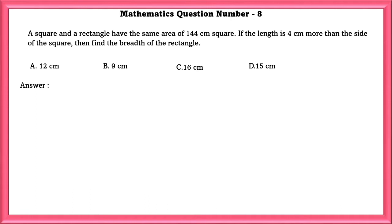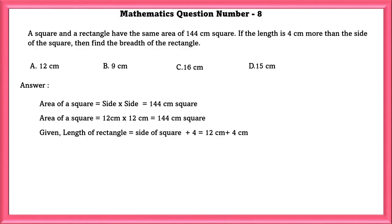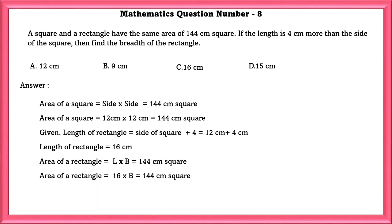Mathematics Question Number 8: A square and a rectangle have the same area of 144 cm square. If the length is 4 cm more than the side of the square, then find the breadth of the rectangle. Area of square is equal to side times side. 12 times 12 is equal to 144. So, one side of the square is equal to 12 cm. Given, length of the rectangle is equal to side of the square plus 4, which is equal to 16 cm. Using this, we can find the breadth of the rectangle. If we find, we will get 9 cm.